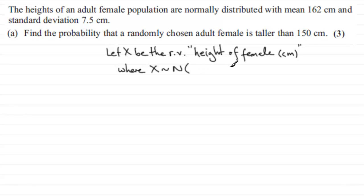In the normal distribution we have two parameters: the mean and the variance. We know the mean is 162 centimeters and we know the standard deviation is 7.5 centimeters, so the variance would be 7.5 squared. I'm going to just write 7.5 squared rather than actually physically working out what that value is.